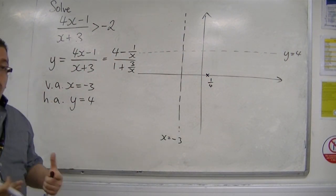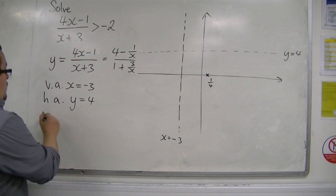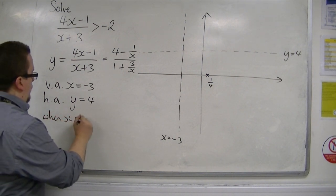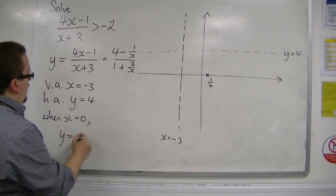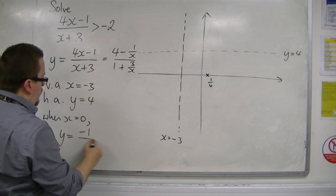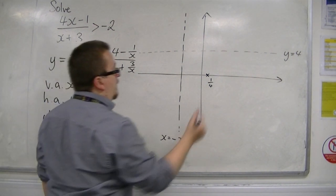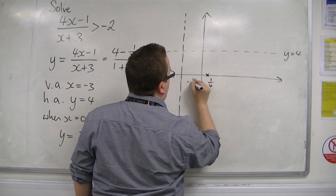And how about where it crosses the y-axis? That's when x is 0. So when x is 0, y is equal to minus 1 over 3, so minus a third. So there's minus a third.